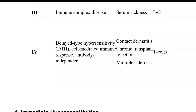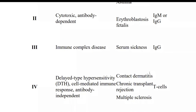Contact dermatitis can be caused by dyes used for coloring clothes, or by different plants. When these come into contact with your body, inflammation and redness begin on the skin. This is contact dermatitis. The second disorder is chronic transplant rejection, where the immune system does not recognize the transplanted organ and treats it as a foreign antigen, rejecting it after six to seven days.